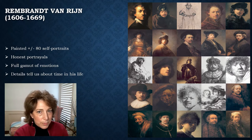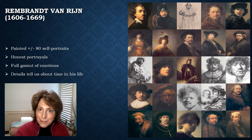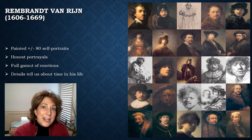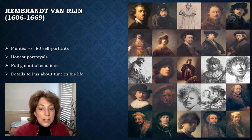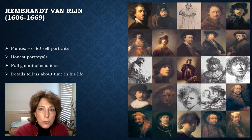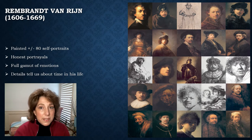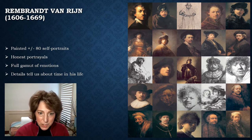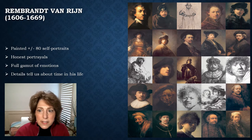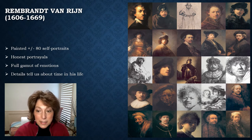We see Rembrandt as a young man, in middle age, and as an old man, in realistic wardrobe and in costumes — he was a big collector of costumes. The portraits have very little background, so they're really all about the subject. In some pictures he looks very well dressed and noble, reflecting a time when he was well-regarded and receiving commissions. In others he looks more contemplative and serious, as he aged and confronted his mortality.